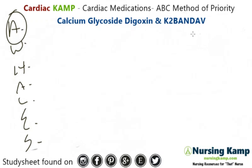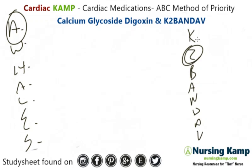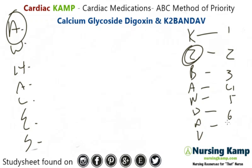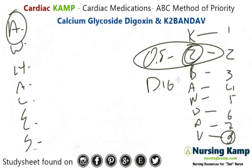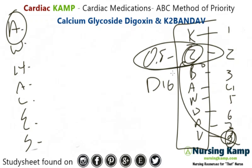The level is 0.8 to 2.0. So K2BandieAV has 8 letters and the minimum level is 0.8 — kind of neat. We said 2 was the max level for digoxin. So a dig level of 0.8 to 2.0 — K2BandieAV is 8 letters and the minimum starts at 0.8.